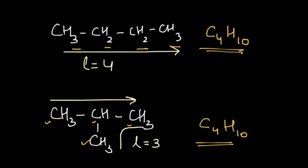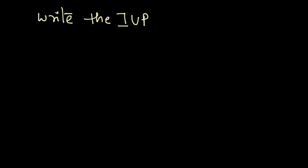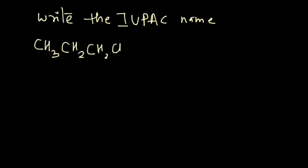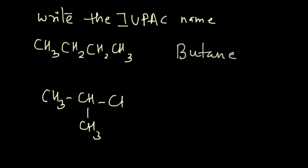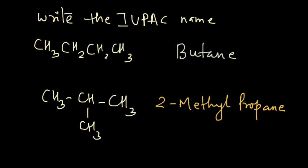A very good way to verify whether two isomers are chain isomers is to write the IUPAC name. You first write the IUPAC name for both compounds. For example, the first compound CH3CH2CH2CH3 is butane, and the second compound CH3CH(CH3)CH3 has the IUPAC name 2-methylpropane. If you have trouble writing IUPAC names, please check my series on IUPAC nomenclature.